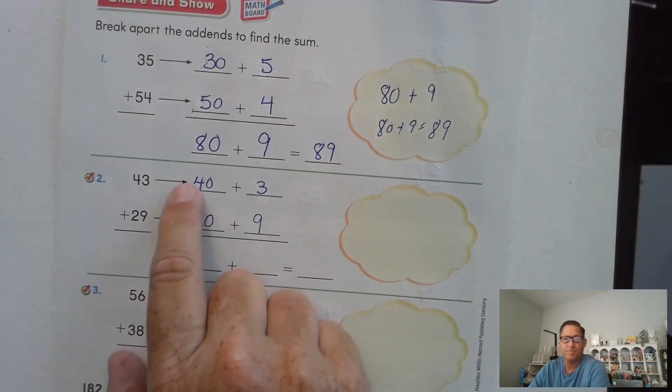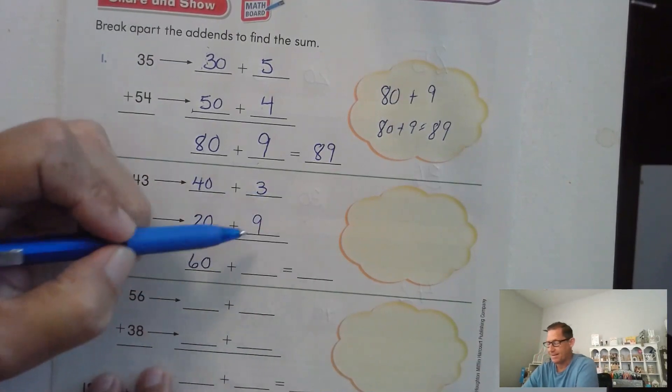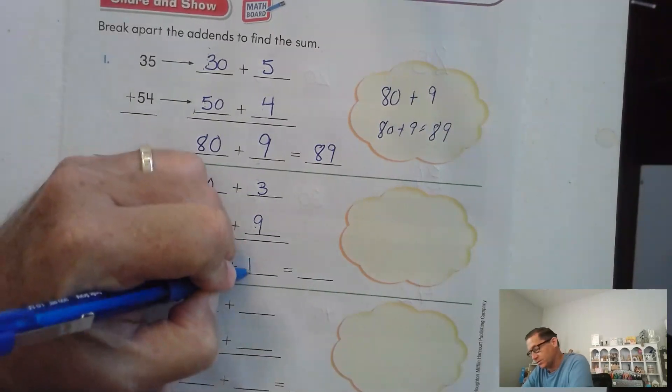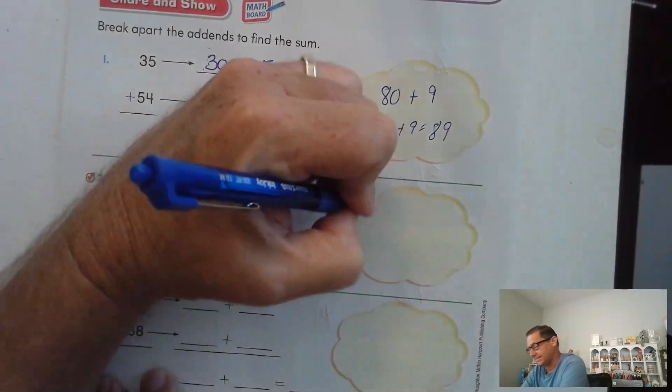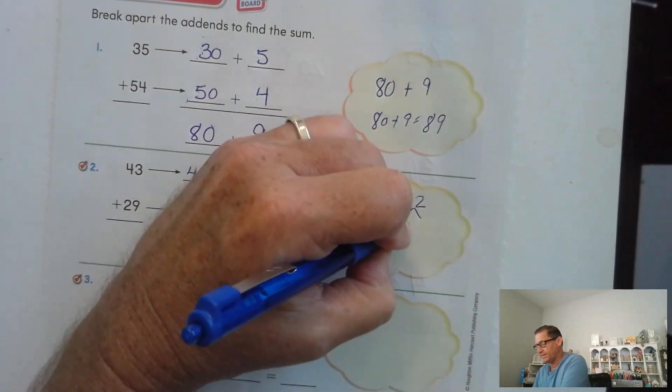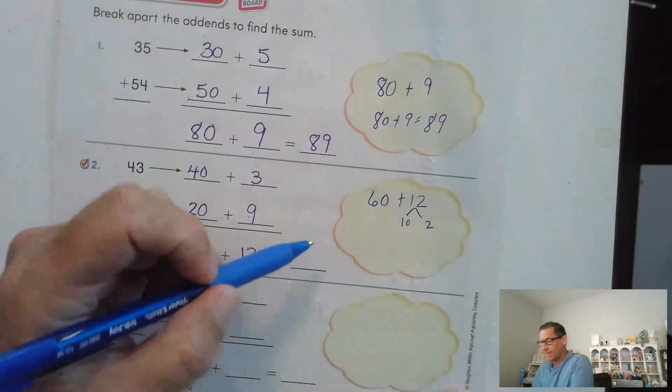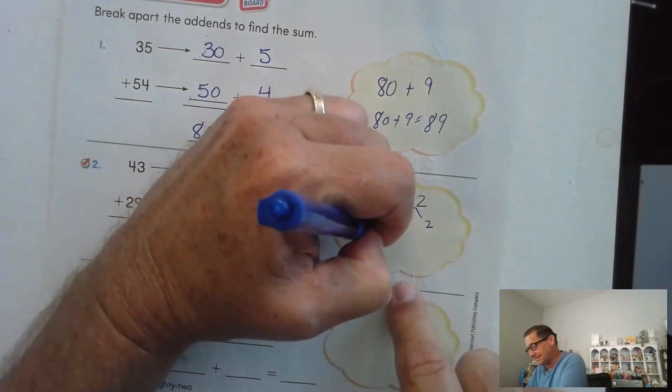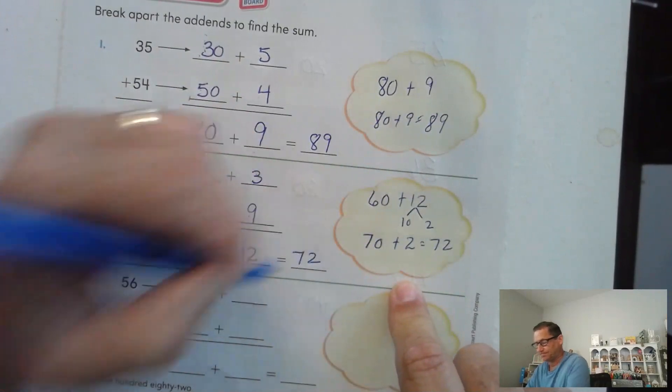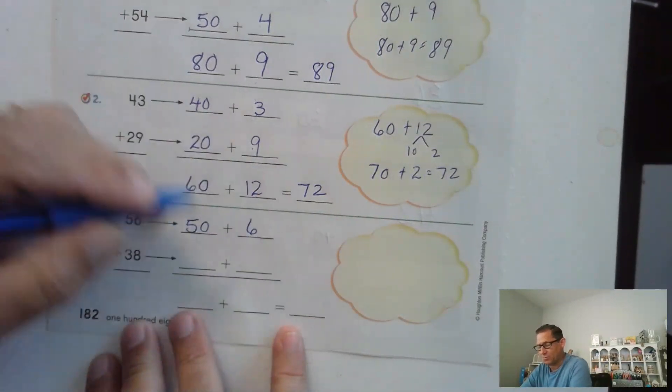Find the sum of the tens. 4, 5, 6 tens is 60. And 9 and three more for ones. 9, 10, 11, 12. 12 ones. 60 and 12. Well, we can break the 12 into 10 and 2. And 60 plus 10 is 70, plus 2 more, 72.